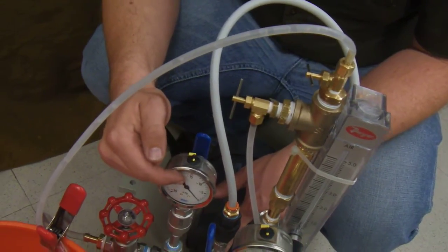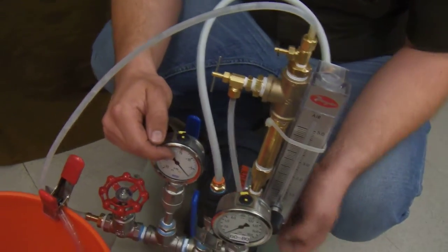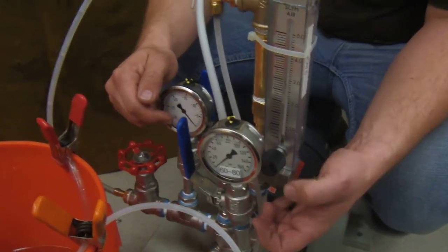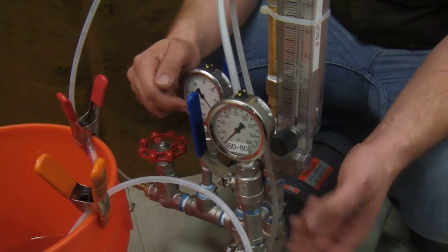This gauge is reading vacuum. So as you add more air in, the suction on the pump is being read from this gauge. So you can compensate for the suction or add air into it.